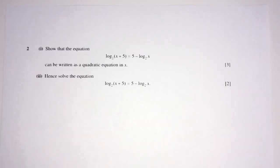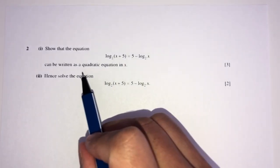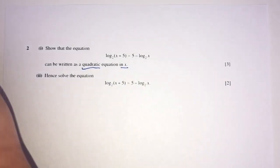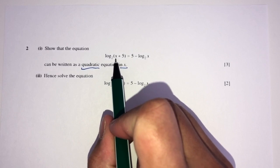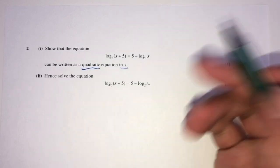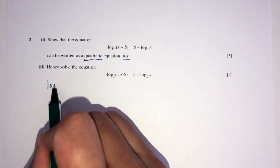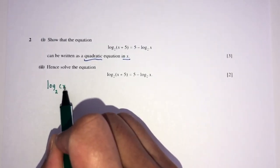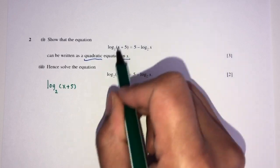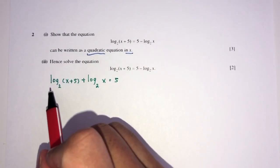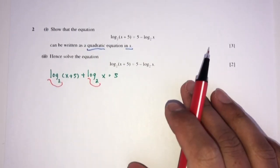Now let's move on to question number two. We have to show that the equation — this minus this — can be written as a quadratic equation in x. We have log base 2 of (x + 5) equal to 5 minus log base 2 of x. First, let's send all the logs to one side: log base 2 of (x + 5) plus log base 2 of x equals 5. Because the logs are the same base, we can combine them.